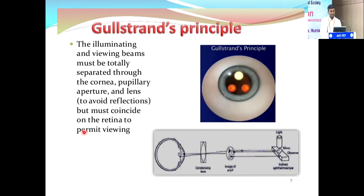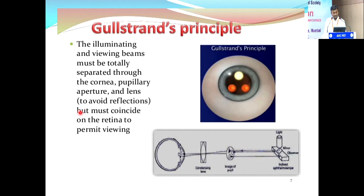Gullstrand's principle is very important to get a good view. It states that the viewing beam and the illuminating beam should be separate. They should coincide on the retina, but the illuminating beam goes through the pupil and cornea, travels through the lens, and gets focused on the retina. The same beam gets refracted back through the lens and pupil to the observer. If the two beams overlap, you get a lot of reflection and cannot get a clear view.